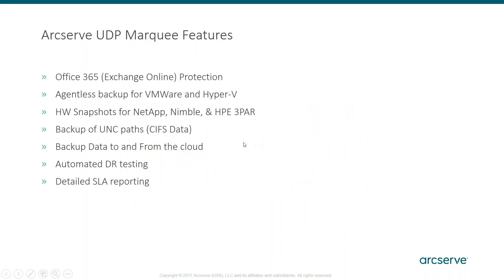When we look at some of the marquee features within UDP: Office 365 protection — we support Exchange Online and SharePoint Online. Agentless backup for VMware and Hyper-V. We do support NetApp, Nimble, and HPE 3PAR. We back up CIFS shares and UNC paths. We can back up data to and from the cloud. We have automated DR testing within the product. And we have SLA reporting — detailed SLA reporting where you can set different SLA thresholds for different tiers of systems, tracking file restore time or full system restore time.